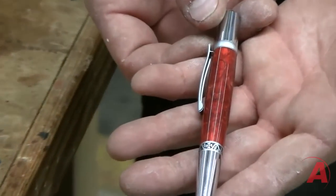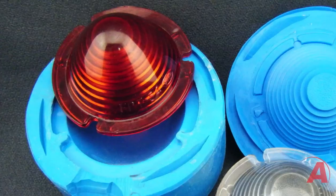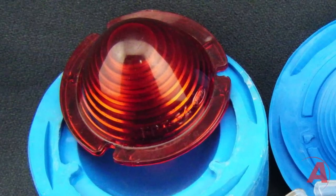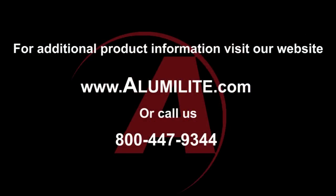Alumidust and metallic powders can also be used in these systems. If you have any questions, visit our website alumalite.com or give us a call at 1-800-447-9344.